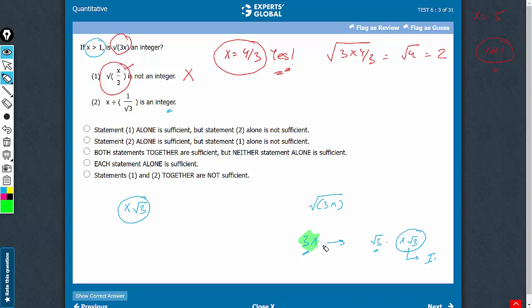And if 3x is not an integer, √(3x) can never be an integer. Square root of something is an integer when the expression inside it is a perfect square, and therefore, definitely an integer. So if 3x is not an integer, √(3x) can never be an integer.